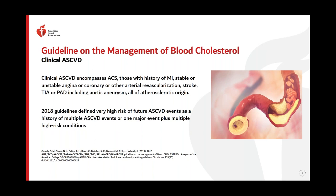Clinical ASCVD encompasses acute coronary syndrome, patients with a history of myocardial infarction, stable or unstable angina without prior MI, other arterial revascularization events, cerebrovascular events such as stroke or TIAs, and peripheral arterial disease including aortic aneurysm of atherosclerotic origin. The 2018 updated guidelines additionally define patients at very high risk of future ASCVD events as those with multiple prior ASCVD events or one major event plus multiple high-risk conditions, which we will discuss later in this presentation.